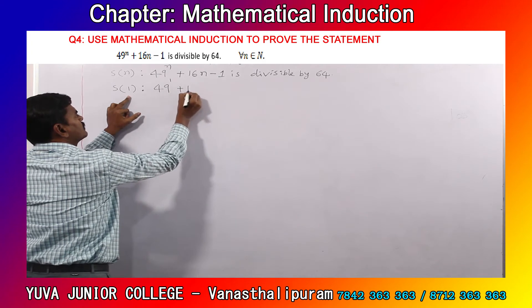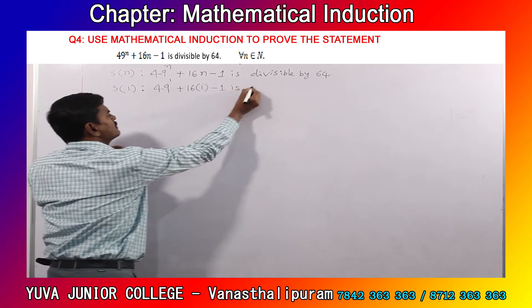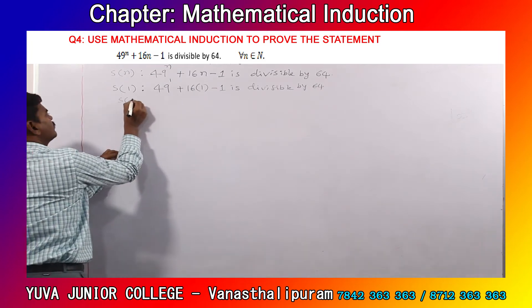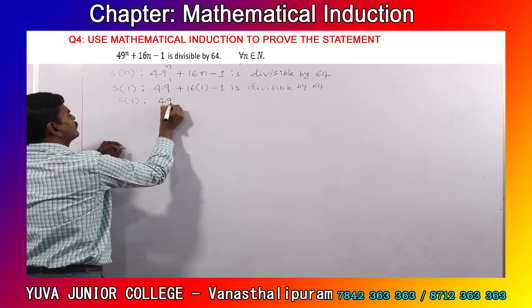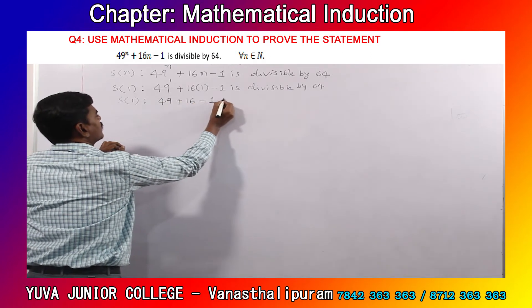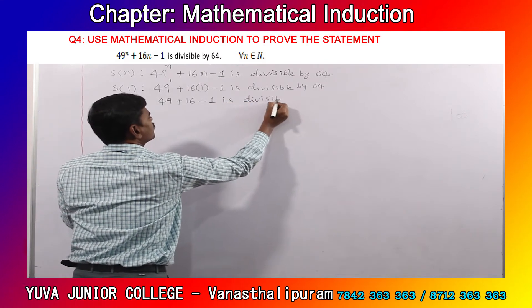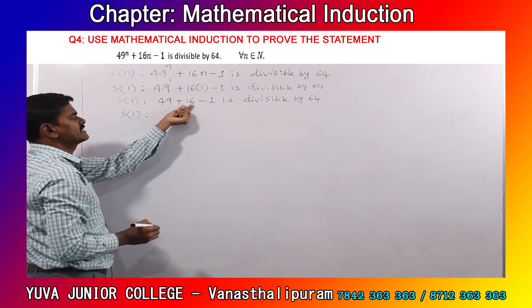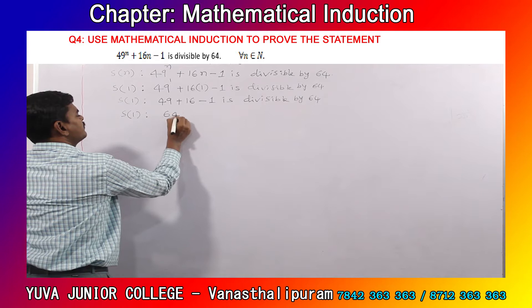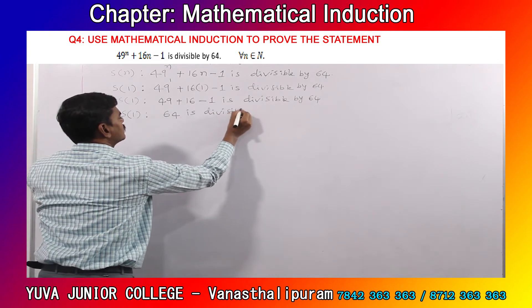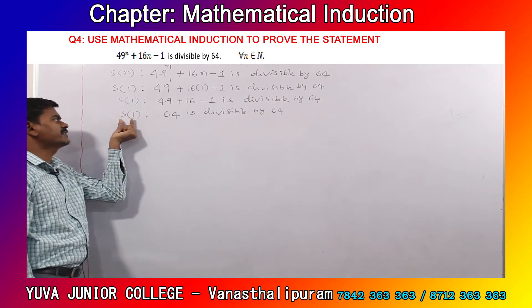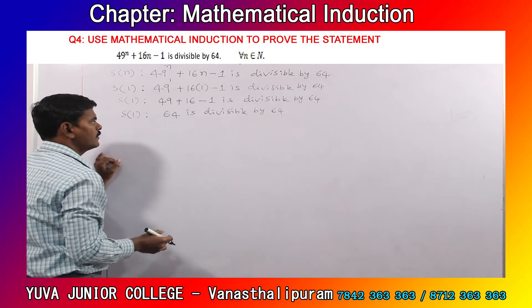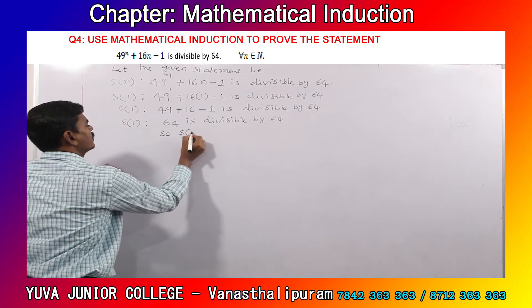49 power 1 plus 16 into 1 minus 1 is divisible by 64. On simplification, S of 1 becomes 49 plus 16 minus 1, which is 64. So 64 is divisible by 64, which is obviously true.